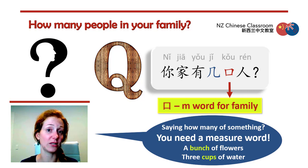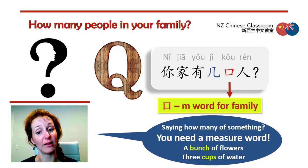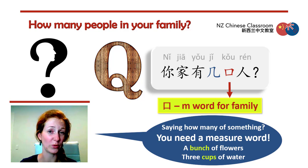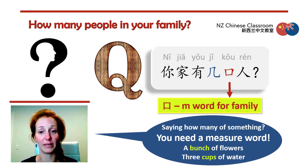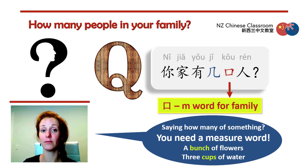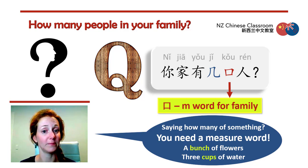So in this case, we're saying how many people we have. This 口 is a special measure word just for people in your family, placed just before the 人.